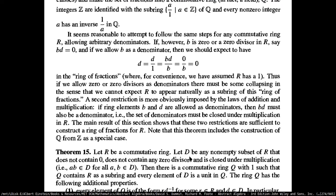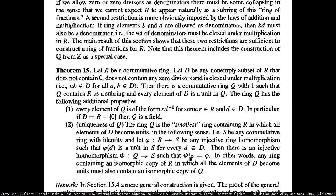We're trying to find a restriction to avoid having denominators as zero or zero divisors. This theorem says: if you have a commutative ring, D is any non-empty subset of the ring that does not contain zero, does not contain any zero divisors, and is closed under multiplication. Then you have a commutative ring Q with the multiplicative identity such that Q is the larger ring that contains R as a subring, and every element of D is a unit in the larger ring.